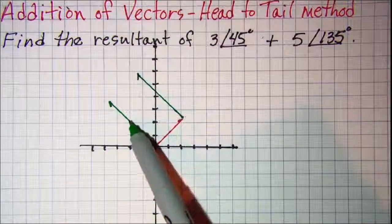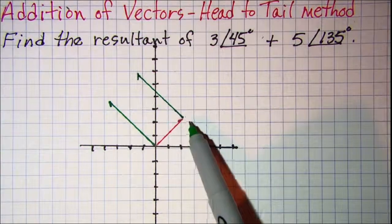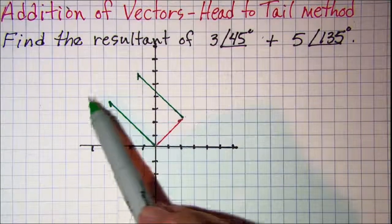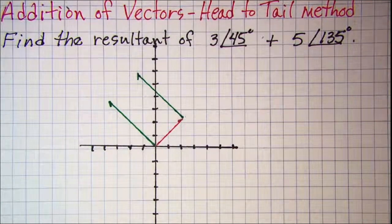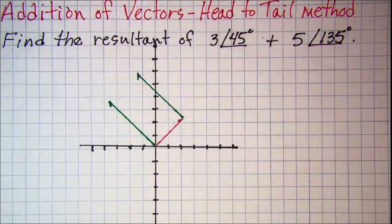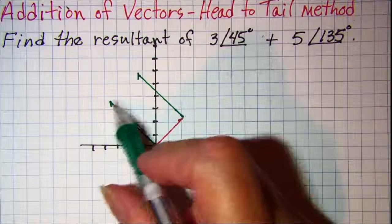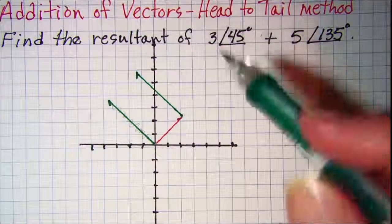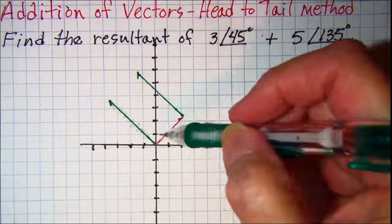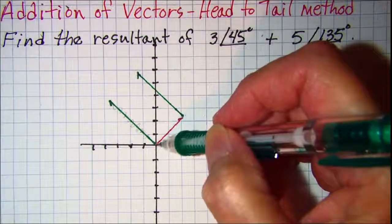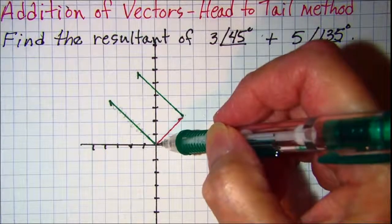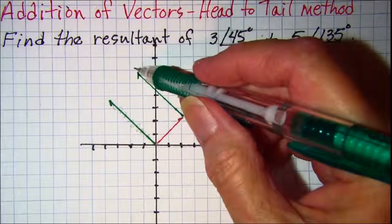So now I've moved this vector up to here, and we're no longer going to be using that original one that I had oriented at the origin, so this one's not in the picture any longer. The resultant is the vector that goes from the tail of the first one to the head of the second one.